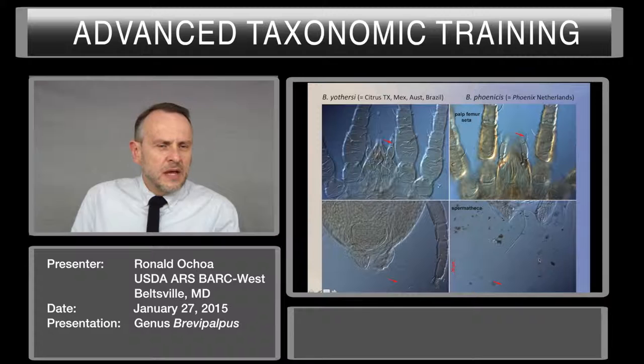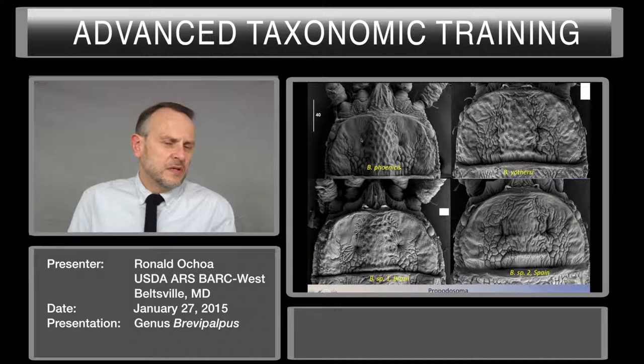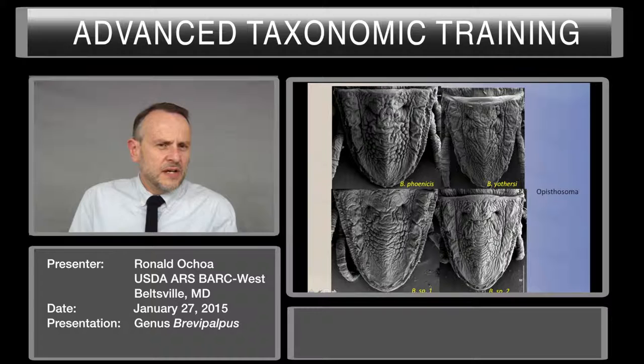Here, again, more photos to help you to separate Brevipalpus yoderi and phoenicis. Let's go in detail: phoenicis, yoderi, and two undescribed species in the lower area. You can see how the central area is ornamented. Notice how smooth is the area laterally close to the base of the legs. Now in the opisthosoma — phoenicis and yoderi, and the undescribed species in the lower area.